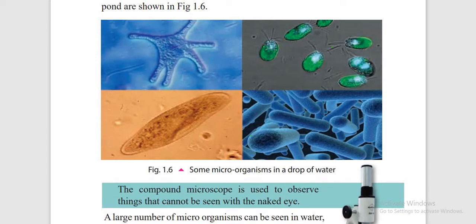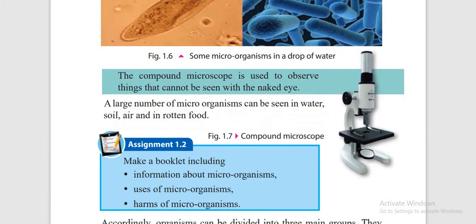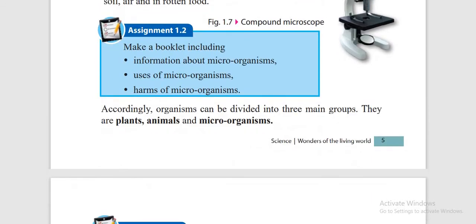Microscopes are divided into compound microscope and electron microscope. The compound microscope is used to observe fungi, bacteria, protozoa and algae. The electron microscope is used to see viruses.